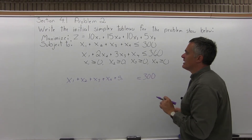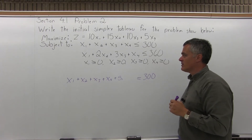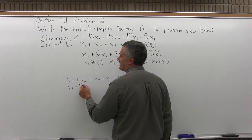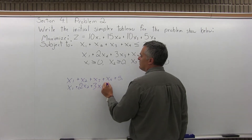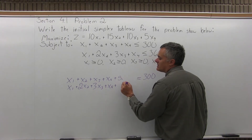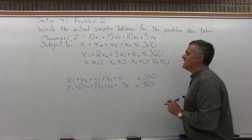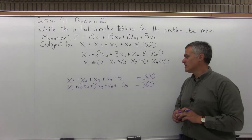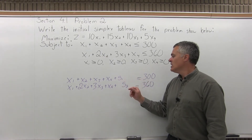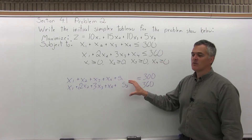My second constraint, x1 plus 2x2 plus 3x3 plus x4 is less than or equal to 360, gets a different slack variable. So it becomes x1 plus 2x2 plus 3x3 plus x4 plus s2 equals 360. For two constraints you need two separate slack variables, because each equation likely needs a different amount of slack. You can't use the same s for both — it has to be a different s.